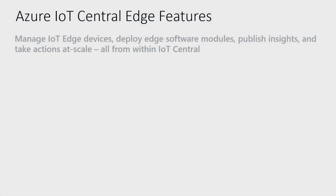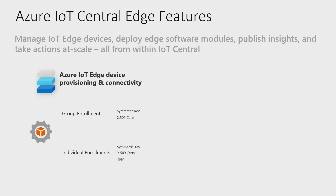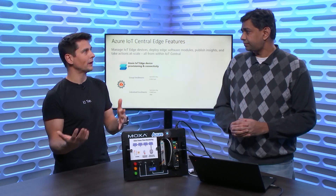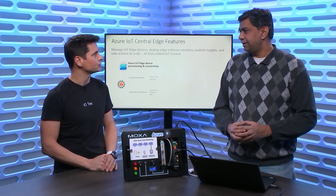For provisioning and connectivity, IoT Central always had DPS integration — IoT Central is powered by DPS. What we had to do for Edge was enable Edge devices to work with DPS in Central. We also now support individual enrollments, which were not available before November, along with TPM support. So we have symmetric key support, X.509 certs, and TPM — basically everything supported for regular devices is now also supported for IoT Edge devices.